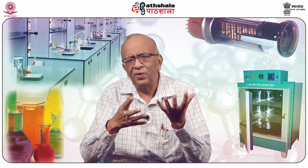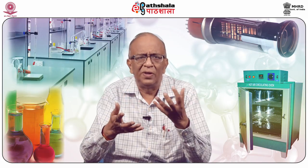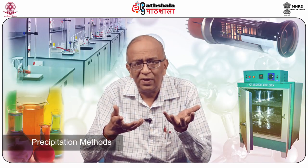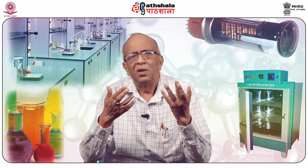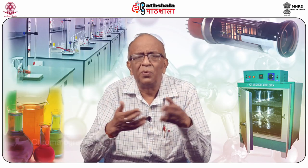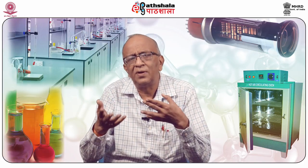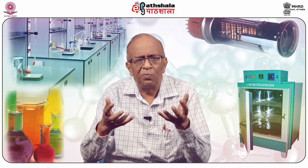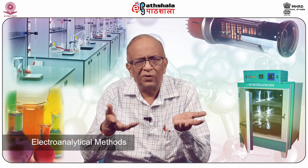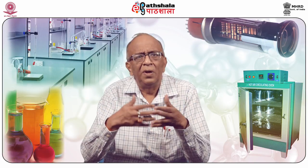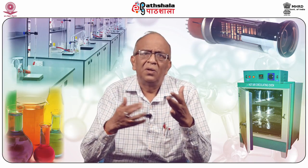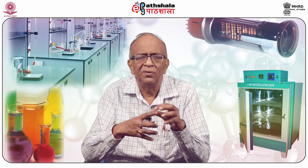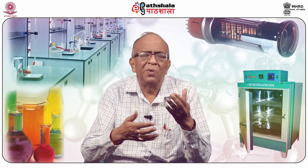For separation purposes, we have three or four methods. One is separation by gravimetric method, that is by precipitation. Another method is by chromatography. By solvent extraction or solid phase extraction we do separations. Another method is electrolytic methods. But in gravimetric methods, we add a chemical substance to precipitate the compound and calculate it.